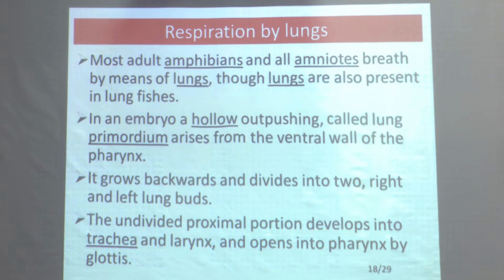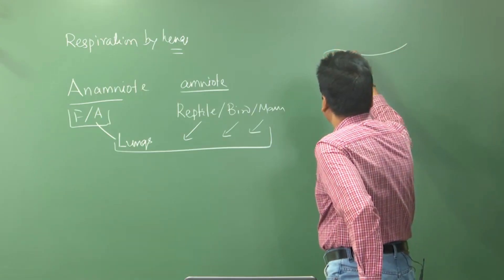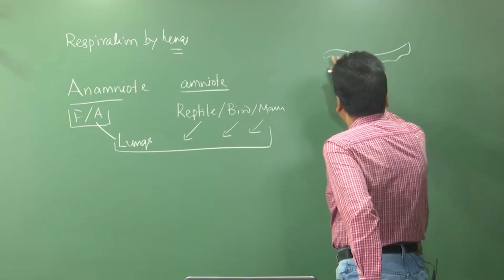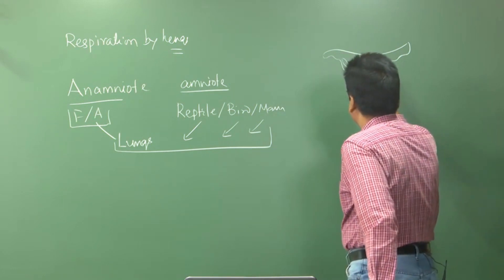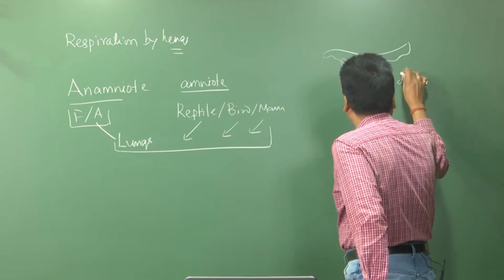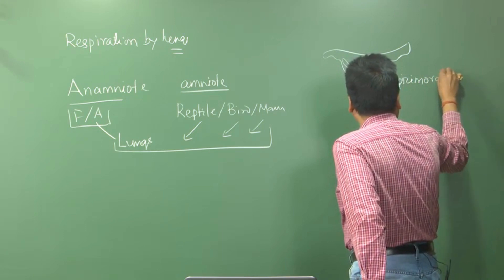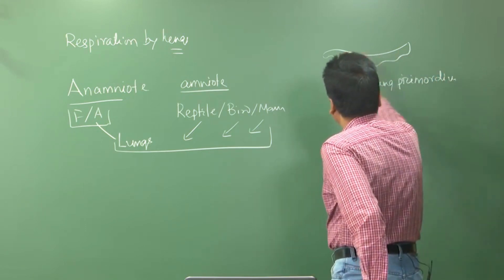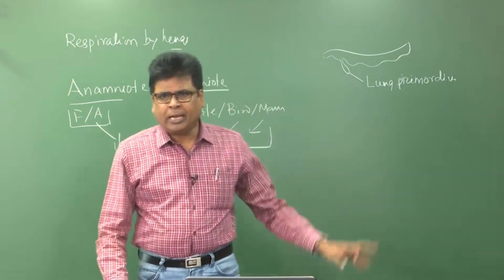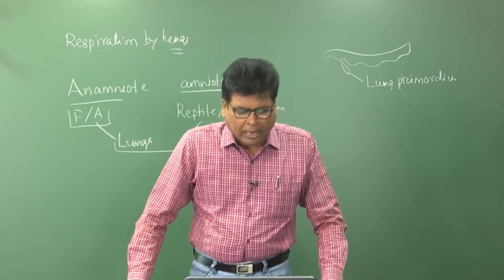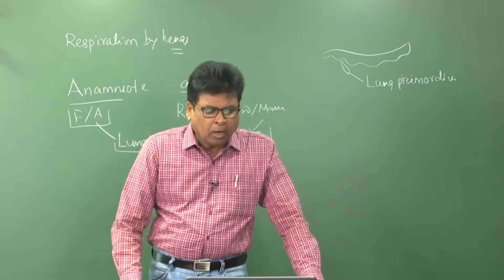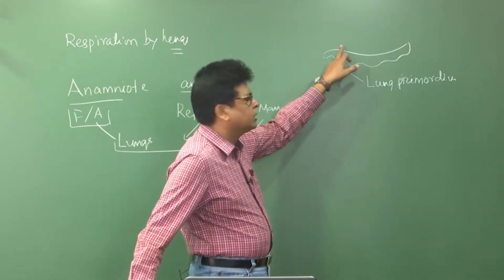In an embryo, a hollow outpushing called the lung primordium arises from the ventral wall of the pharynx. During development, the gut has a pharyngeal region, and the lungs develop as an outgrowth of this pharyngeal region. This outgrowth is called the lung primordium. It grows backward and divides into two — the right and left lung buds.